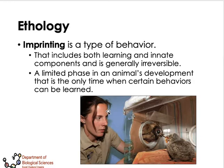Imprinting happens when the offspring is still young and cannot be applied at an adult age. Imprinting is very important for conservation biology because certain species need more care than others, and conservation biologists take advantage of imprinting especially for taking care of young endangered animals.